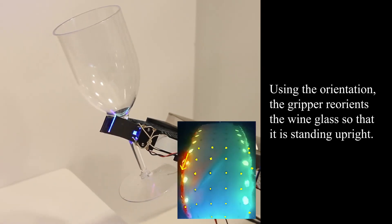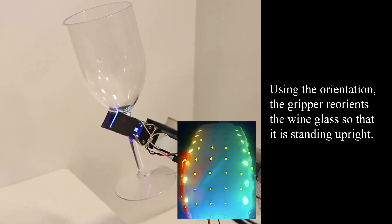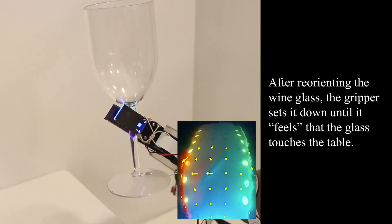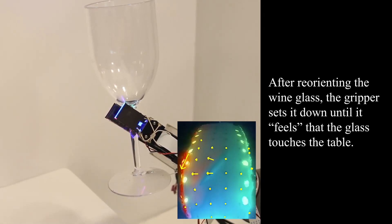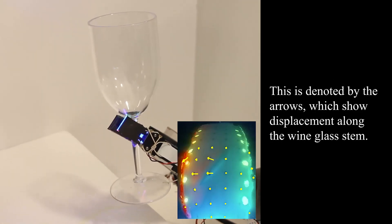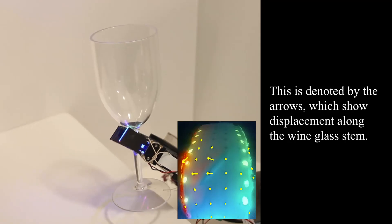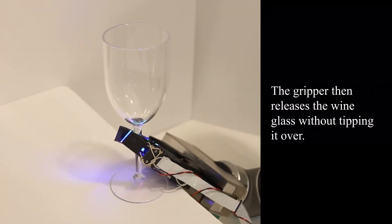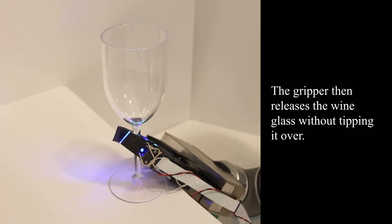Using the orientation, the gripper reorients the wine glass so that it is standing upright. After reorienting the wine glass, the gripper sets it down until it feels that the glass touches the table. This is denoted by the arrows, which show displacement along the wine glass stem direction. The gripper then releases the wine glass without tipping it over.